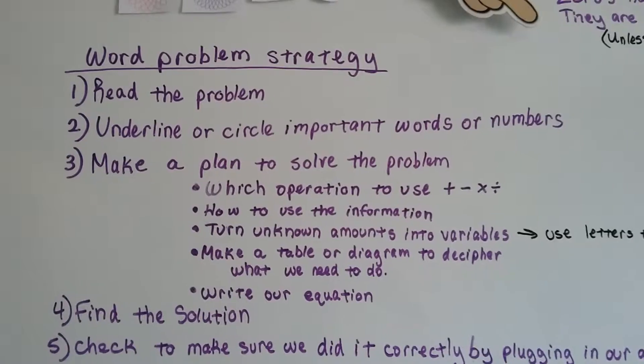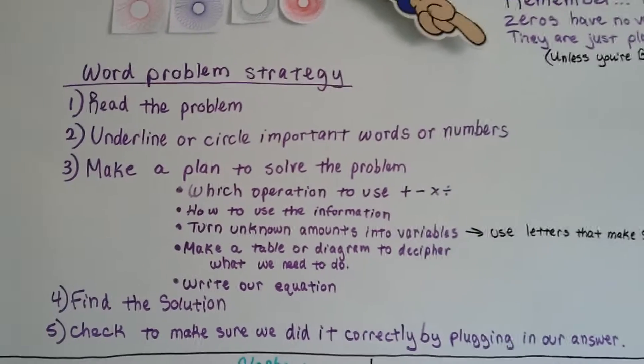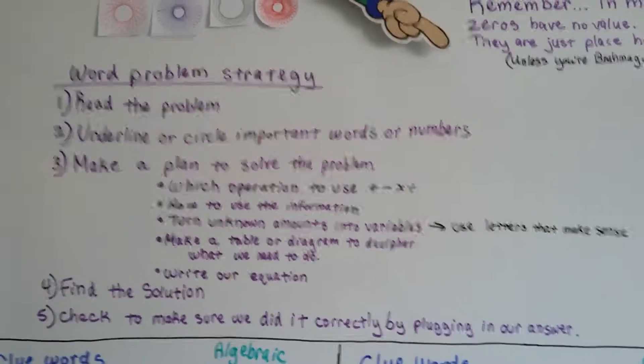So our word problem strategy is, we're going to read the problem. Then we're going to underline or circle important words or numbers.